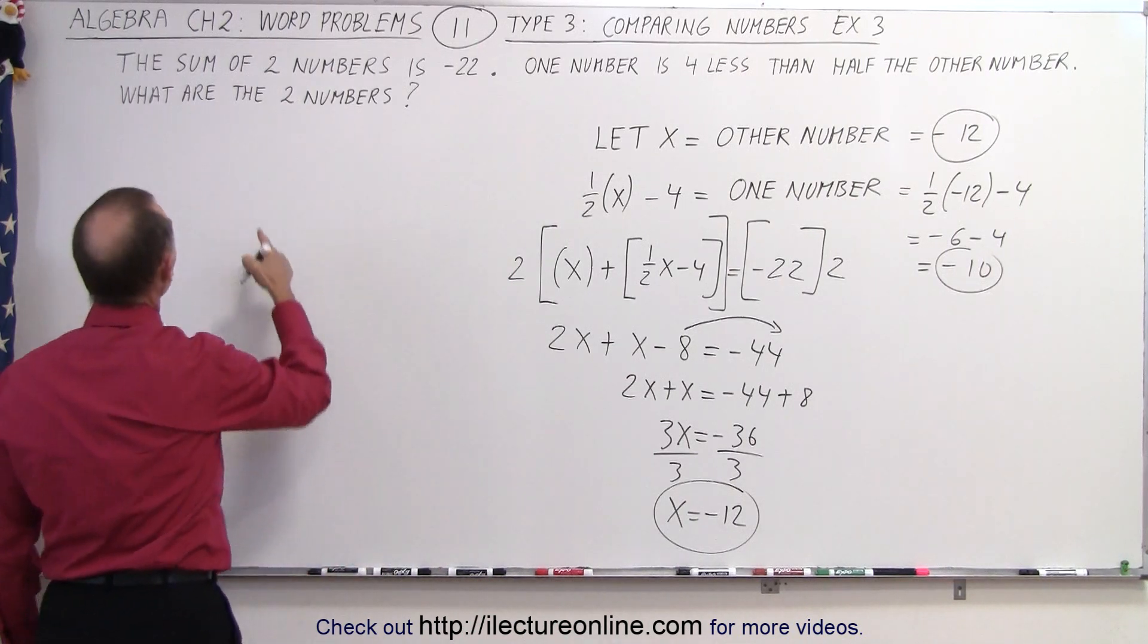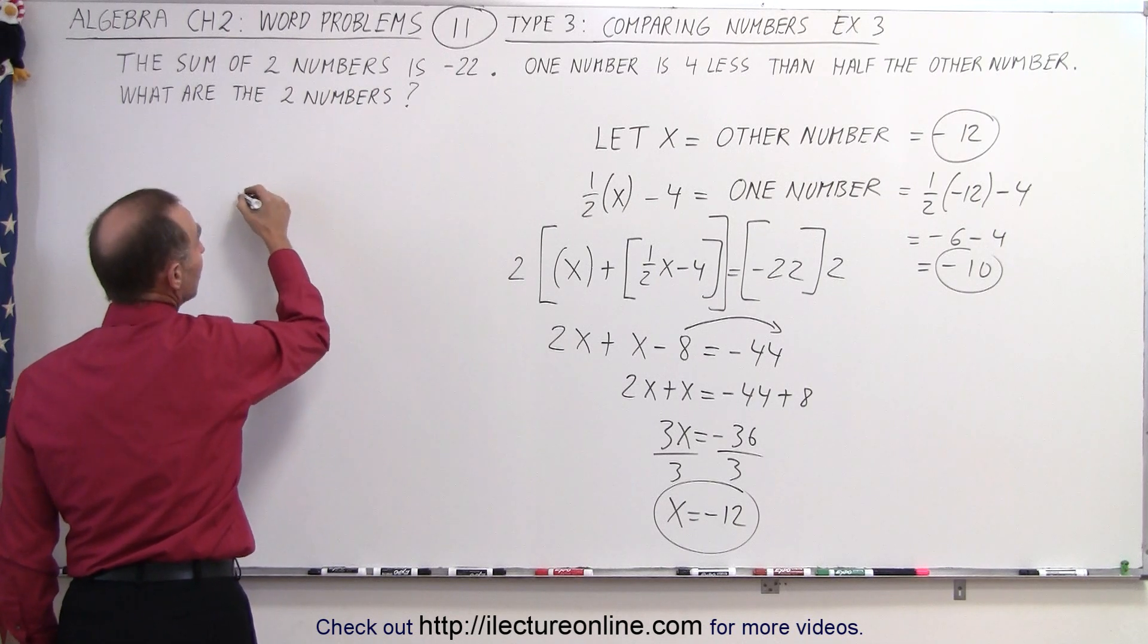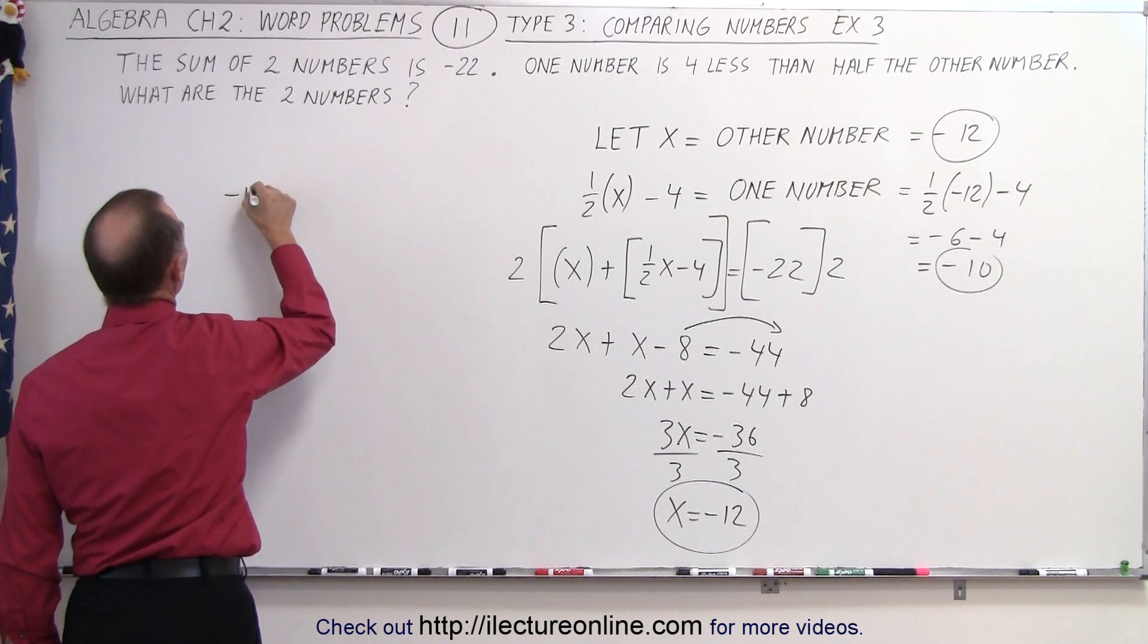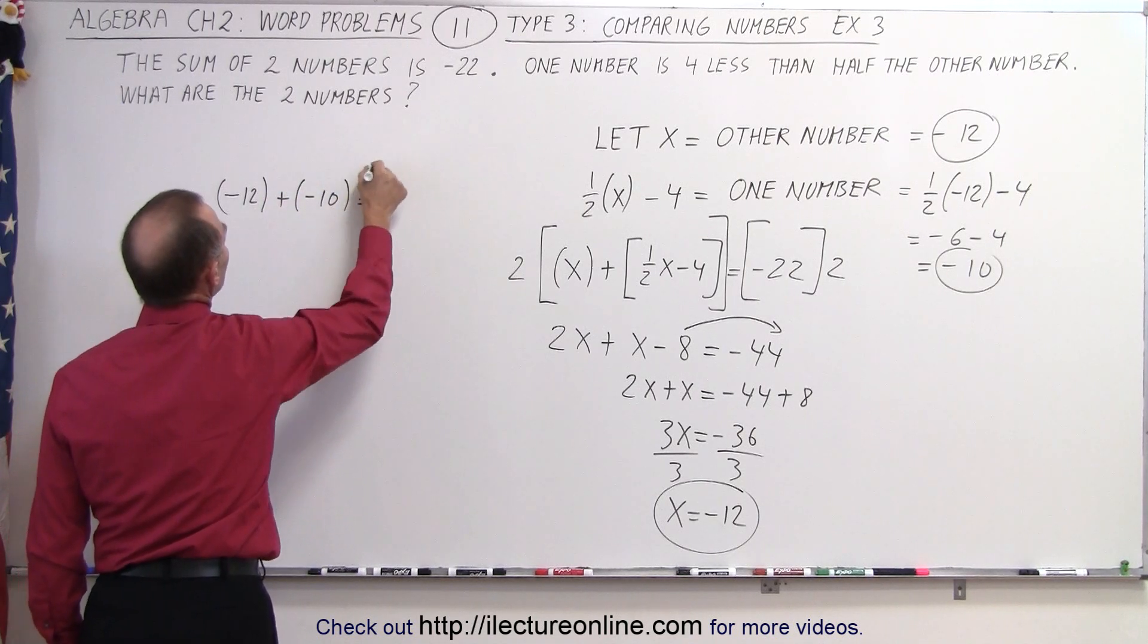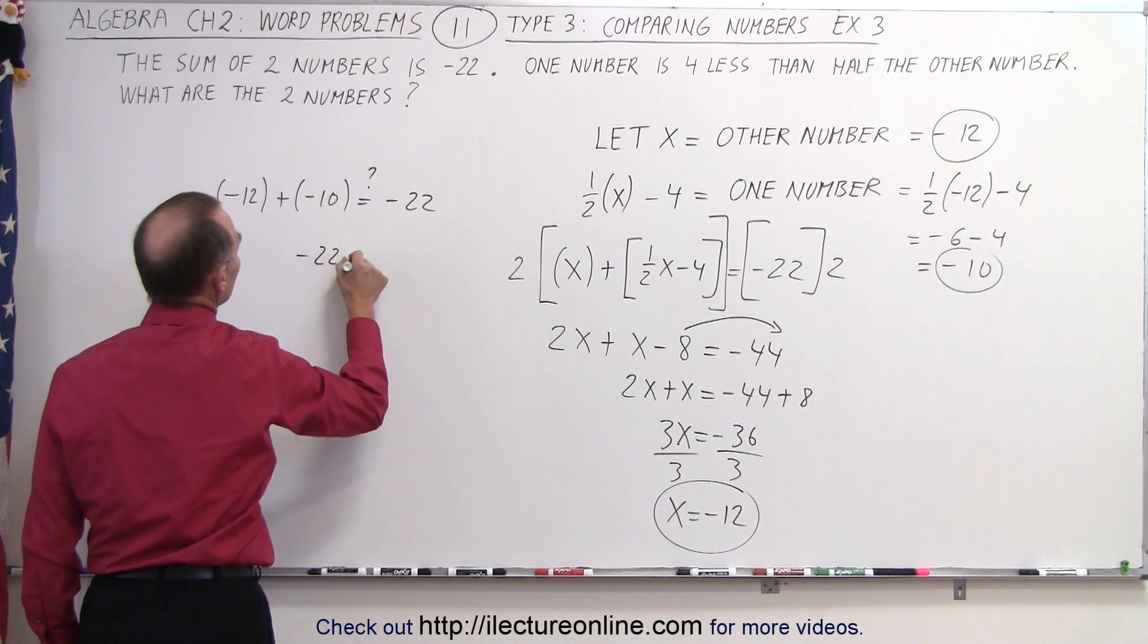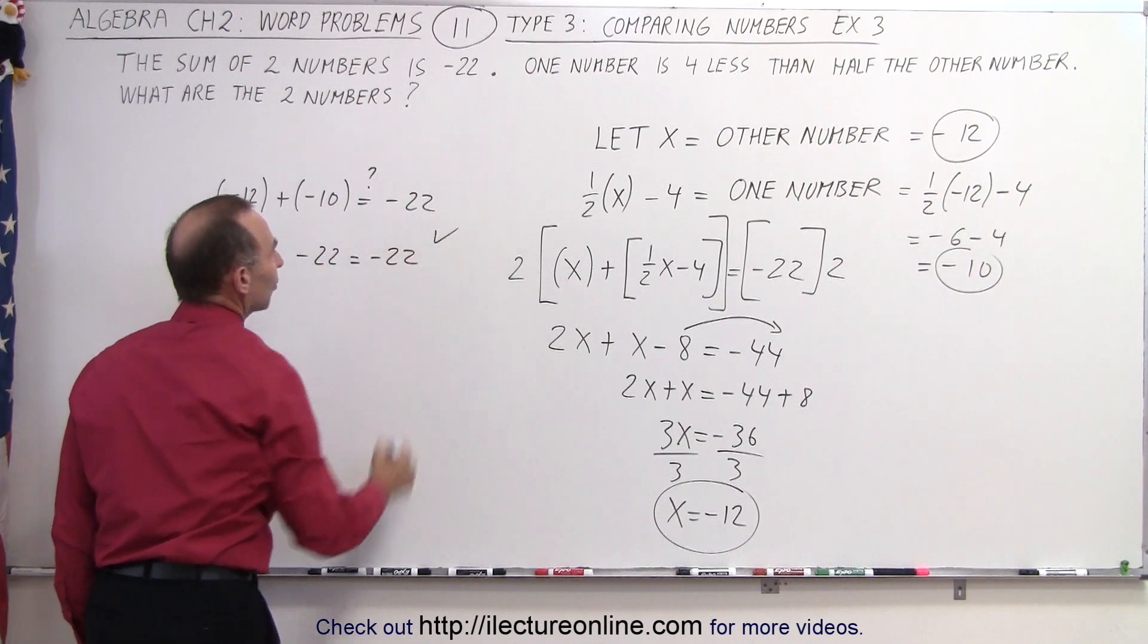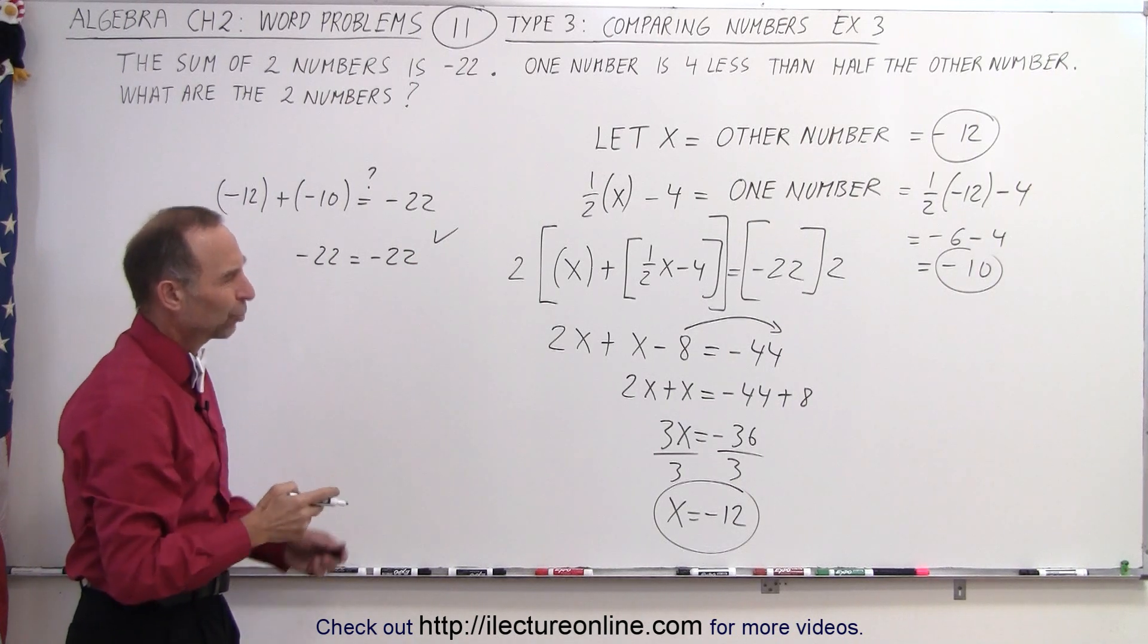Let's check to see if we have it correct by saying that the sum of the two numbers equal to negative 22, which means that minus 12 plus a minus 10. And is that indeed equal to minus 22? And the answer is yes. Minus 12 minus 10 is minus 22 equals minus 22, which means the two numbers we found are correct, minus 10 and minus 12.